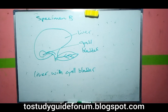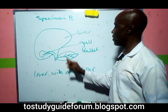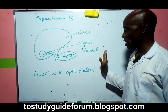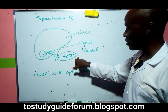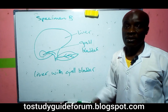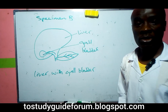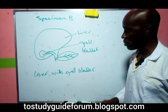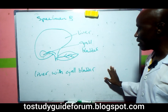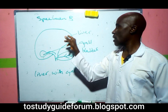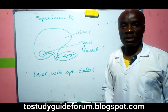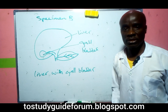Next, we'll look at Specimen B: a liver with gallbladder. The liver and gallbladder are the major areas of interest. There may be a pancreas visible but the key focus is the liver with gallbladder.